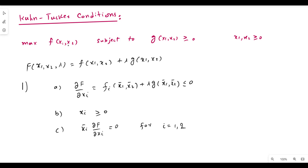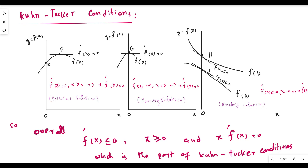To understand what these conditions mean, let us take a diagram. Assume a simple case in which y is a function of x, and there are three panels: panel A, panel B, and panel C. In panel A, you can see that x is positive and f'(x) equals zero. At this point the derivative is zero and x is positive, so multiplying them gives x·f'(x) = 0. This is the first case — an interior solution, because you are using a positive amount of x.